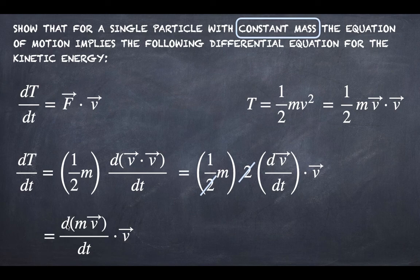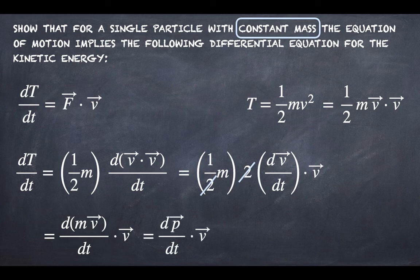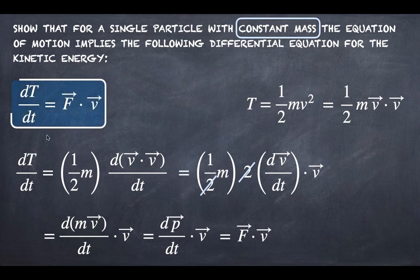So we obtain the derivative of mv·v, and mv is the definition of momentum. So now we have the time derivative of the momentum dotted with the velocity, and the time derivative of momentum is the force. This gives us F·v, which is exactly what we were looking for.